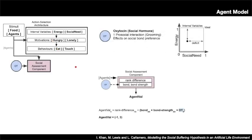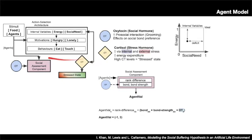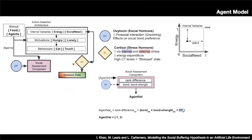Prior to a behaviour being executed, there's an intermediate step where the model accounts for the presence of two hormones. Cortisol, our stress hormone, is released as a function of the combined deficits of the two variables and the lack of availability of external resources. Elevated levels of cortisol increase energy expenditure and deplete energy faster, and prolonged elevated cortisol results in agents being stressed, which affects their behaviours.